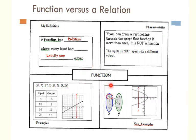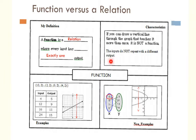Remember, if I'm going too fast you can rewind and pause to copy this into your notebook. The definition of a function is: a relation where every input has exactly one output. Since inputs are often x's and outputs are y's, another way to think of it is every x has exactly one y. A characteristic of a function is that if you draw a vertical line through the graph and it touches more than once, it is not a function. Also, inputs do not repeat with a different output — x's do not repeat with a different y.